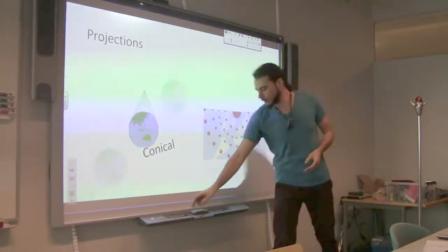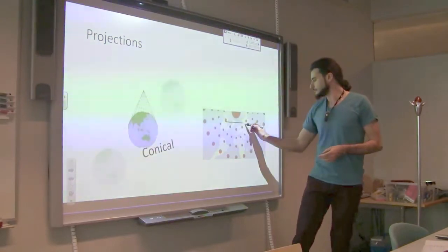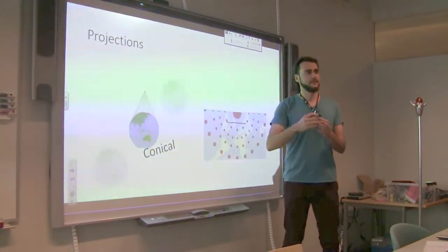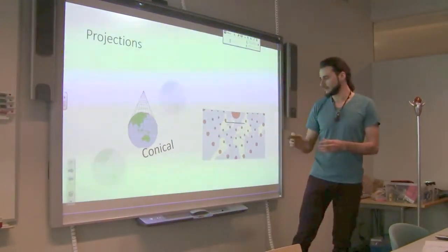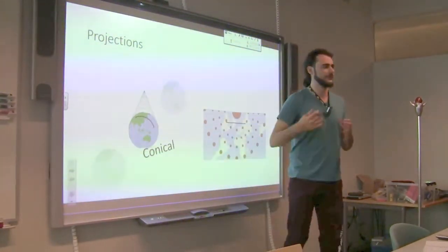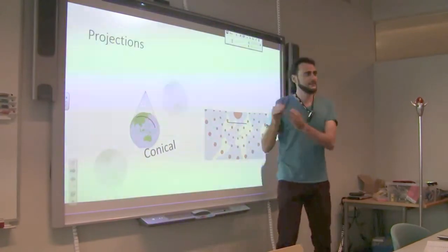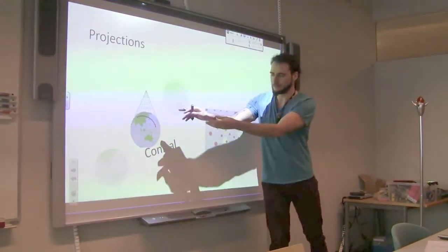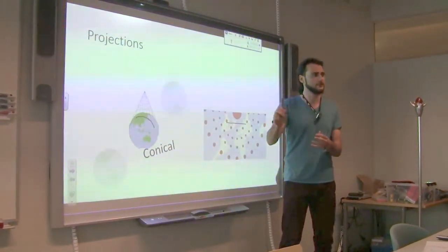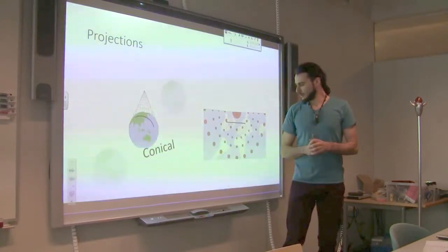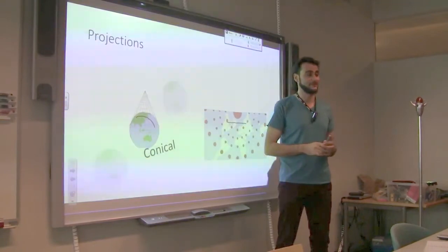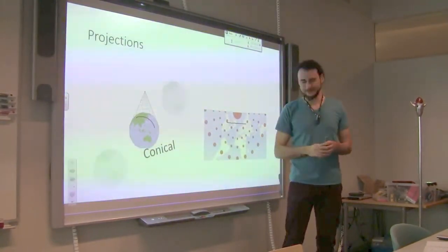If you draw a straight line on this map, it approximates very well what is happening in reality. In reality, a straight line like this would look as a curve on top of the Earth, but straight lines here are approximately the same length as the curved line on the surface of the Earth. So they are good when planning flight routes. This is not something we will need very much unless you come up with a project that deals with flight navigation.